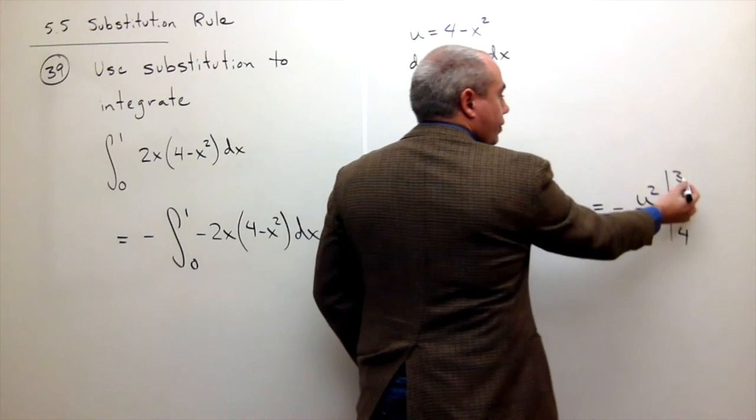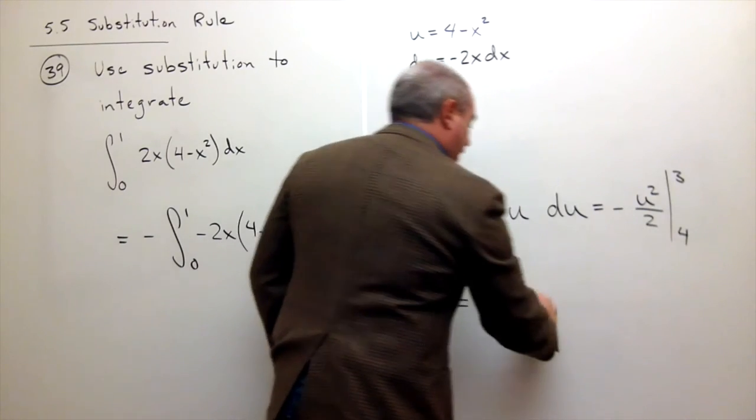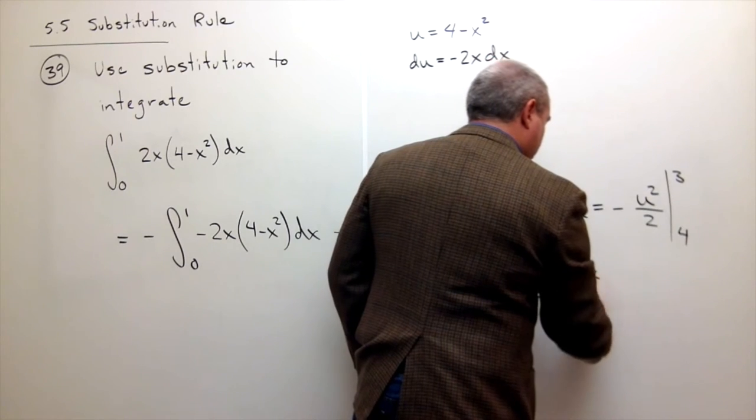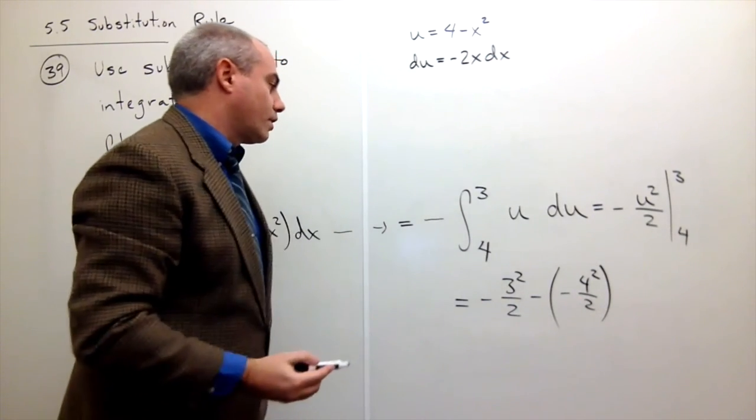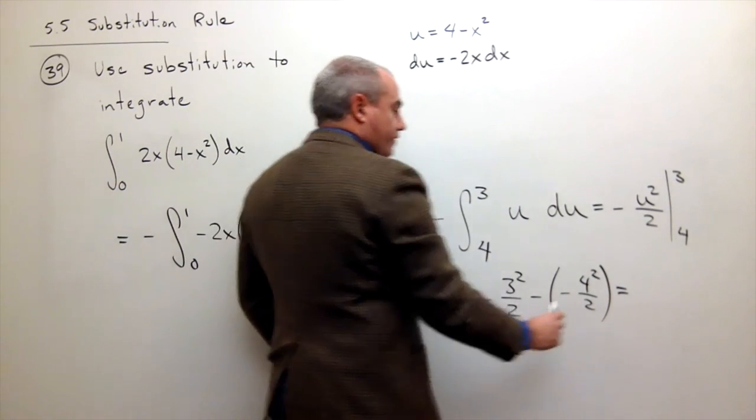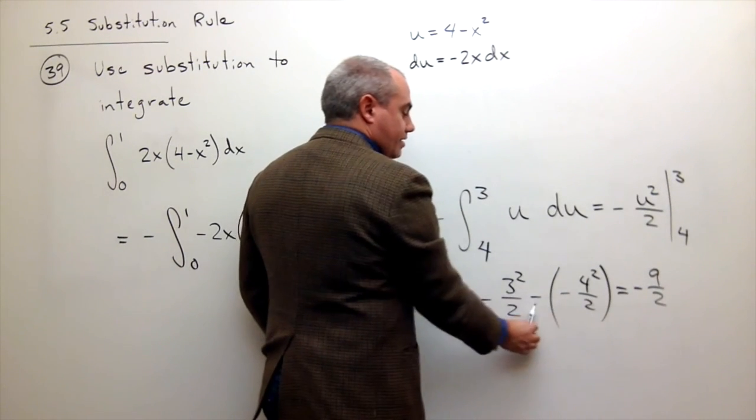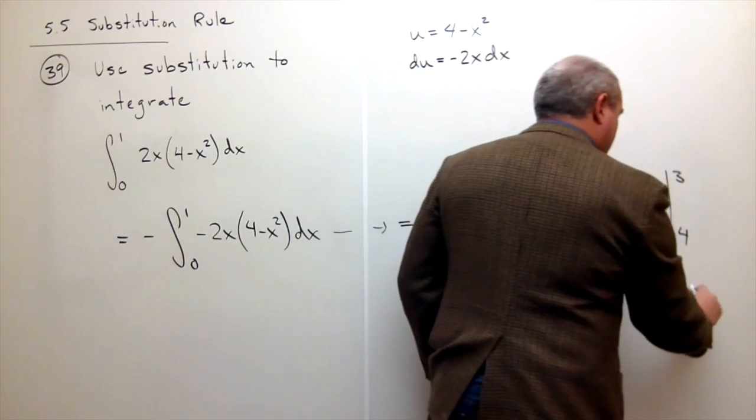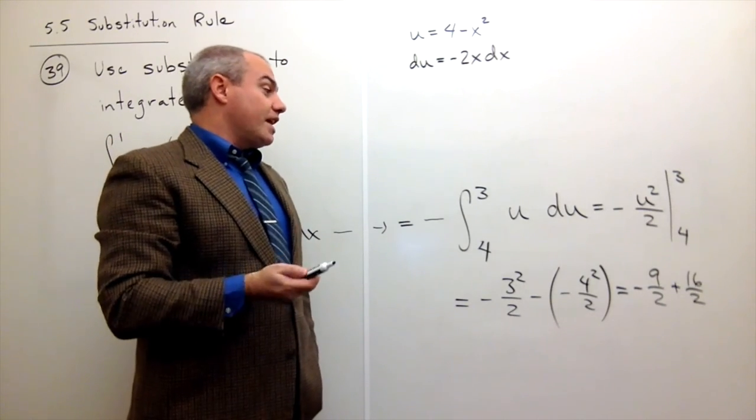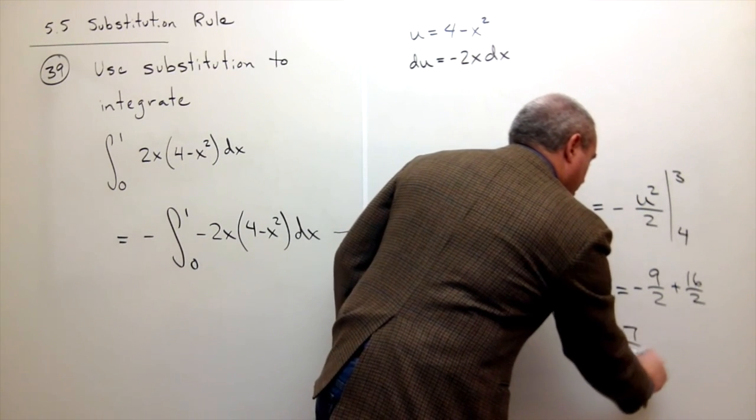I get negative 3 squared over 2, minus negative 4 squared over 2. So what do we end up with? Well, this is negative 9 halves. And then this is minus, minus, so plus 16 halves. So we have 16 halves minus 9 halves. That would be 7 halves. So our answer is 7 halves.